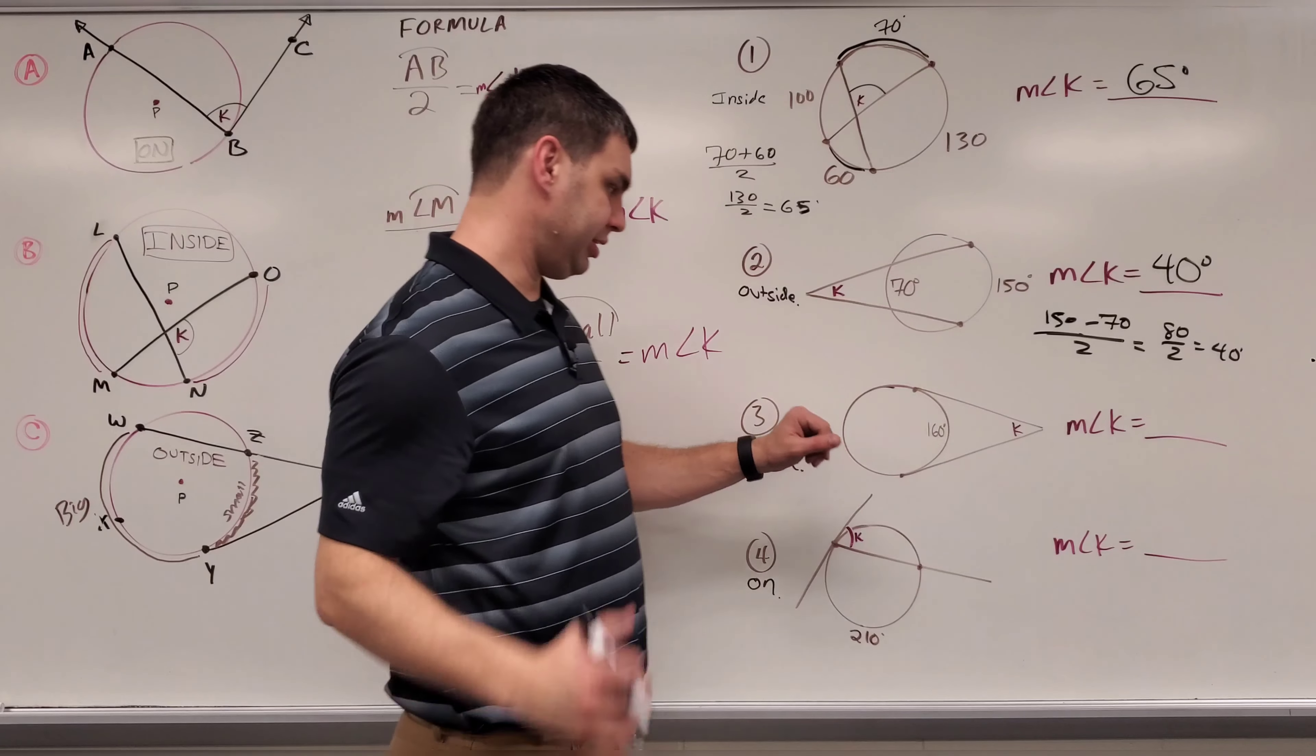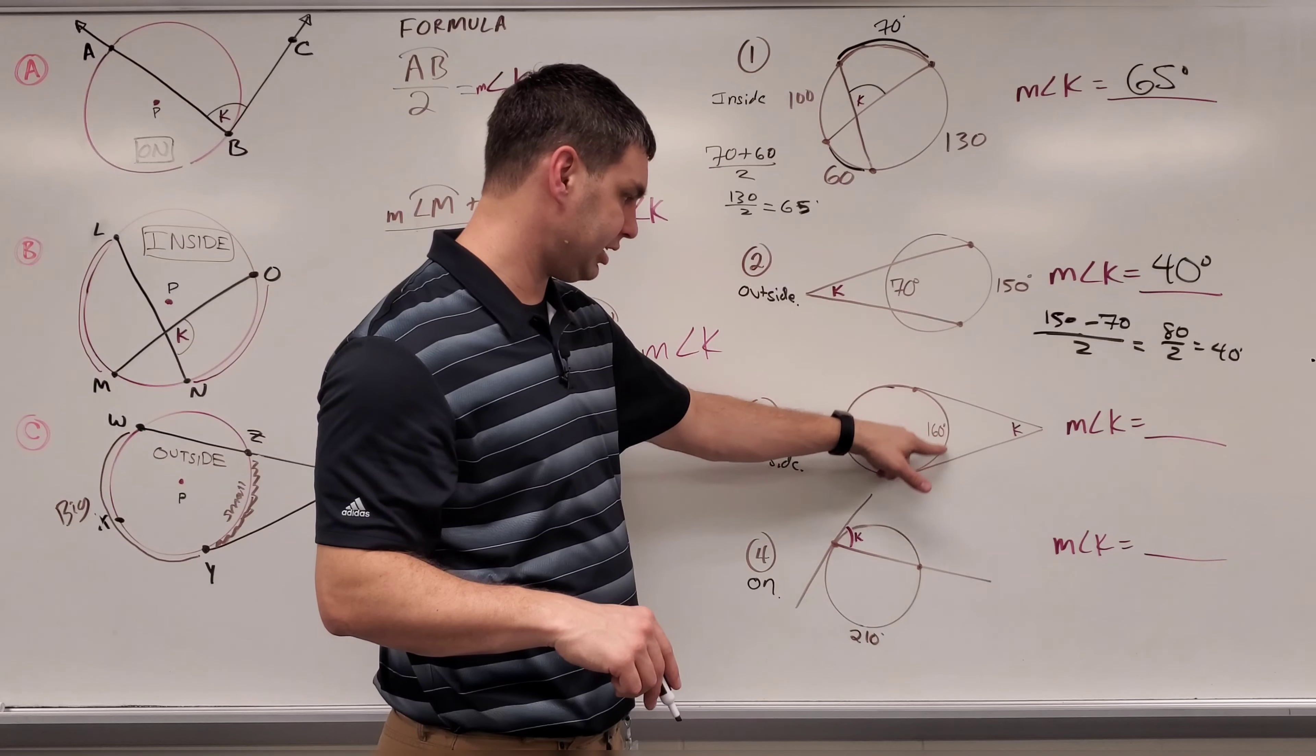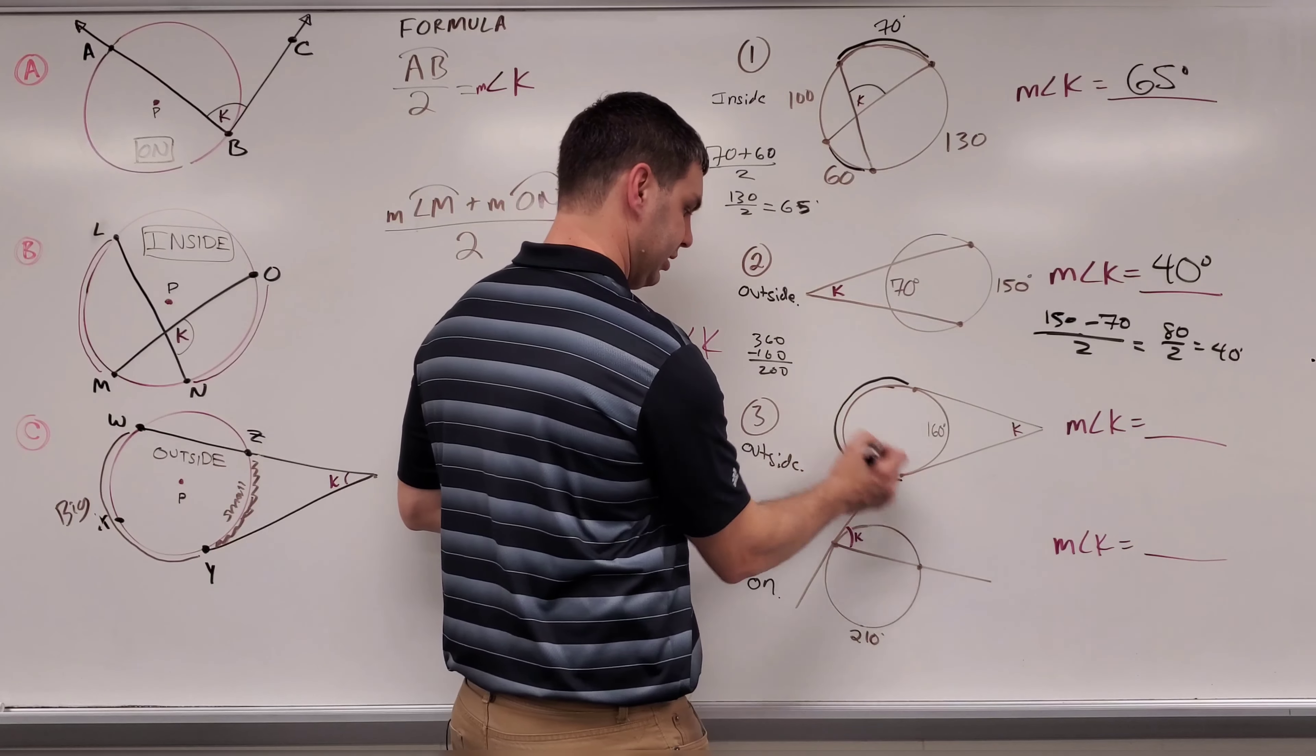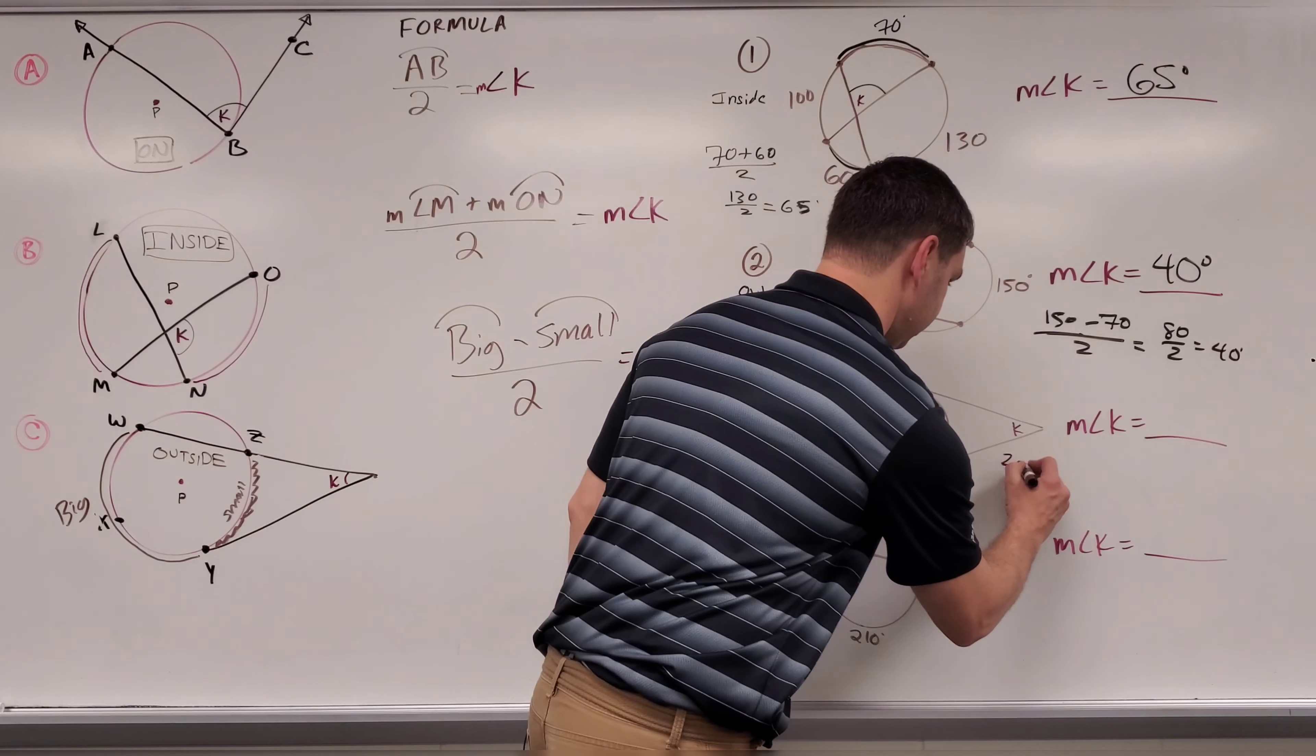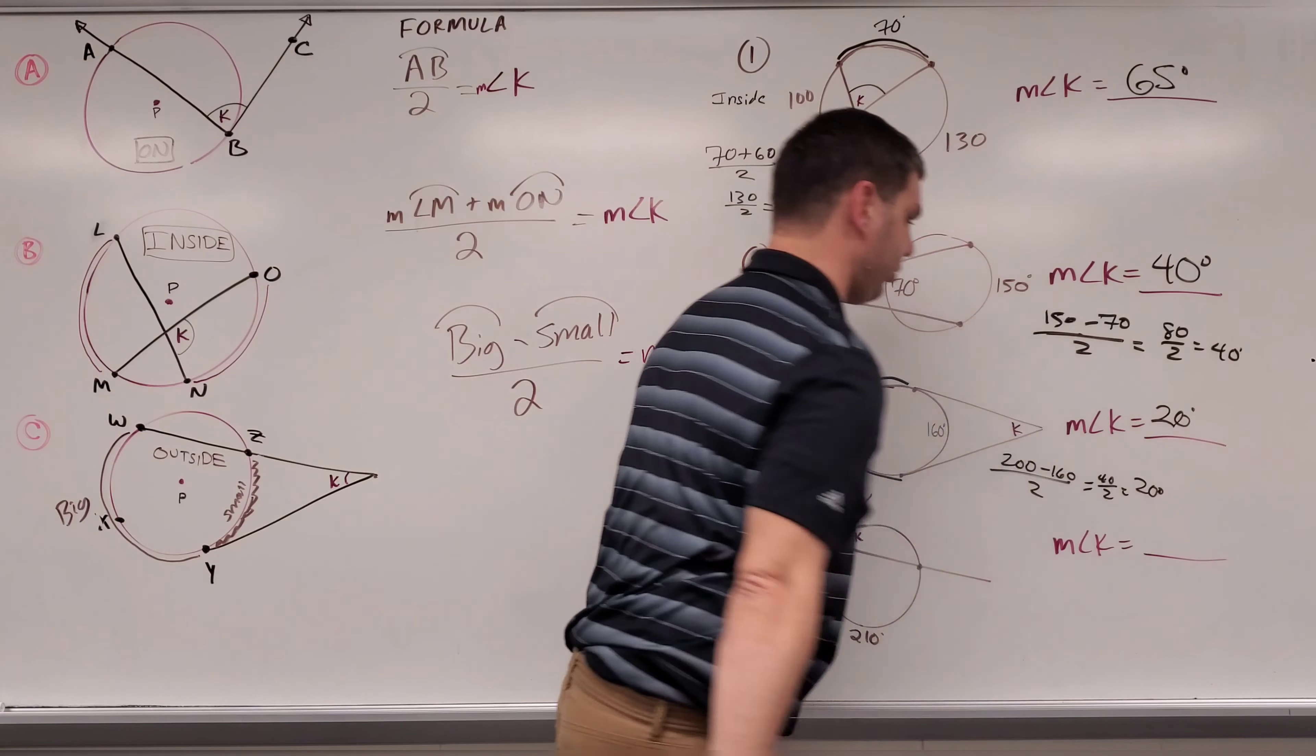And the next one is also outside, but it only gives us this part of the circle. However, to find the rest of the circle, I know that a circle is 360 degrees. And so if all of this is 360, and I only know this part is 160, well, 360 minus 160 is 200. So the rest of this arc right here is going to be 200 degrees. Therefore, again, if I apply that same formula, big minus small, 200 minus 160 over two. Well, 200 minus 160 is 40, and 40 divided by two gives me 20 degrees for angle K.